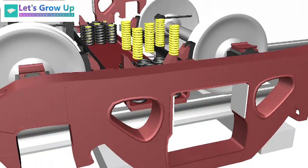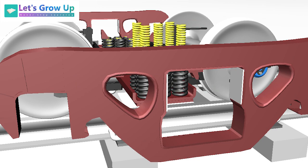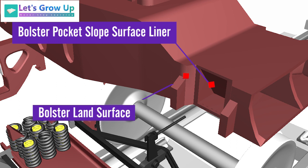The side frame has some important parts to support the suspension: side frame column sides, anti-rotation lugs, side frame friction liners. Let's see the bolster parts: bolster pocket slope surface liner, bolster land surface, rotation stop lugs or liner.